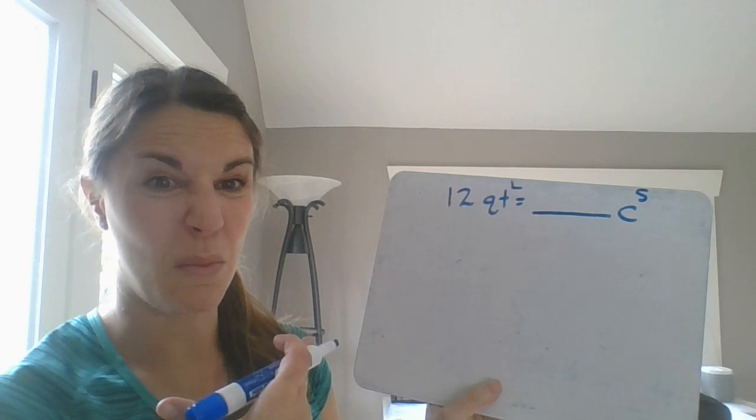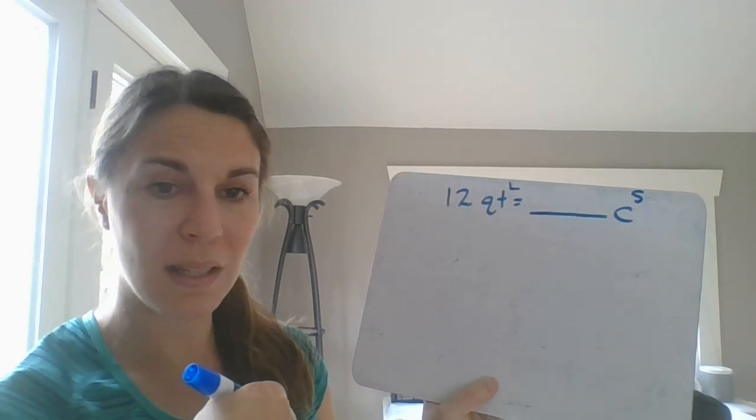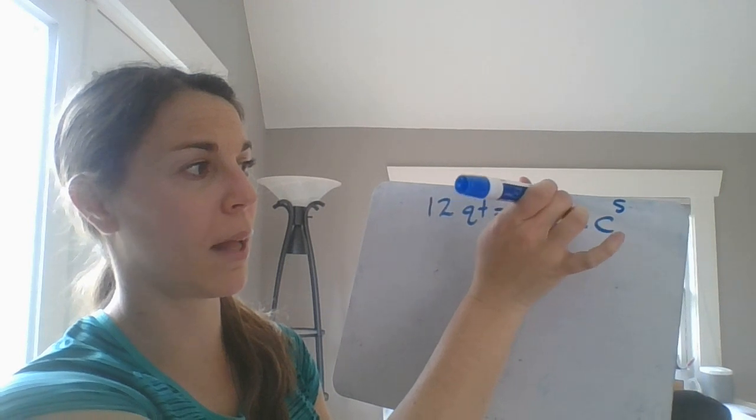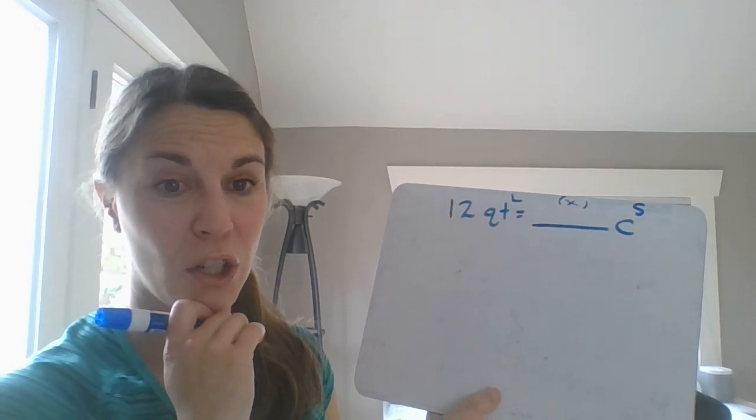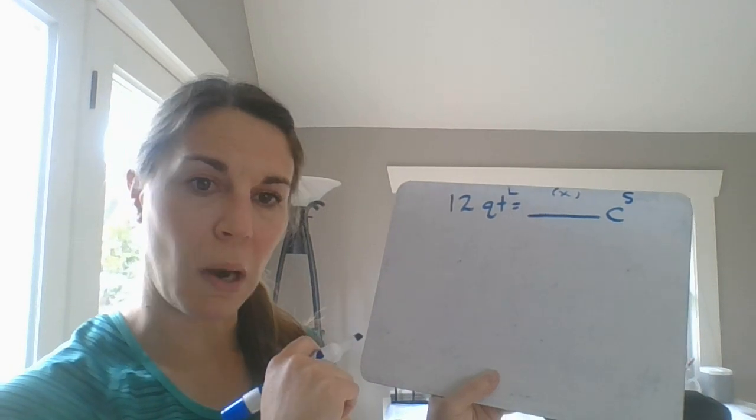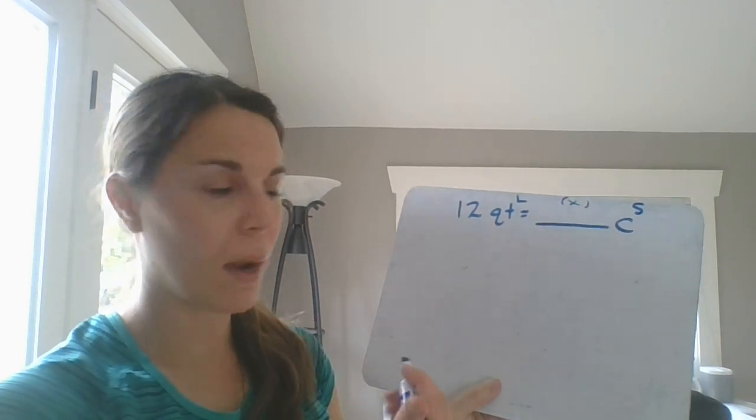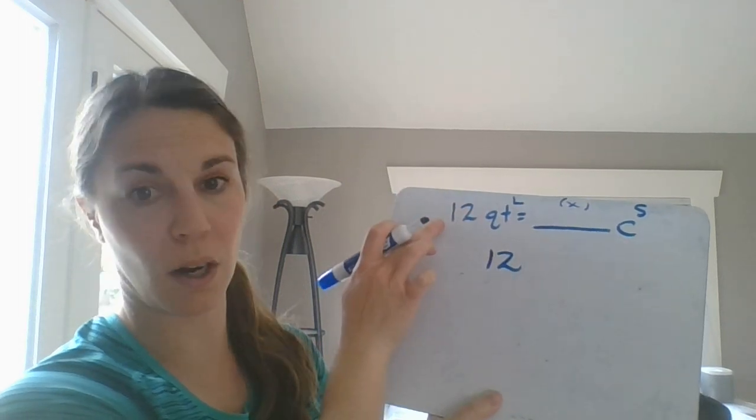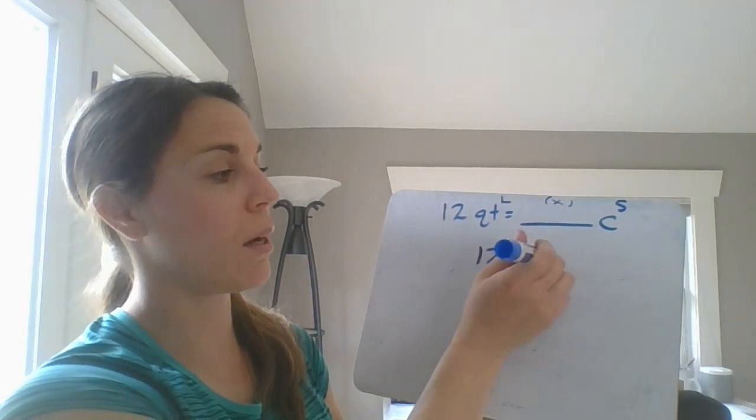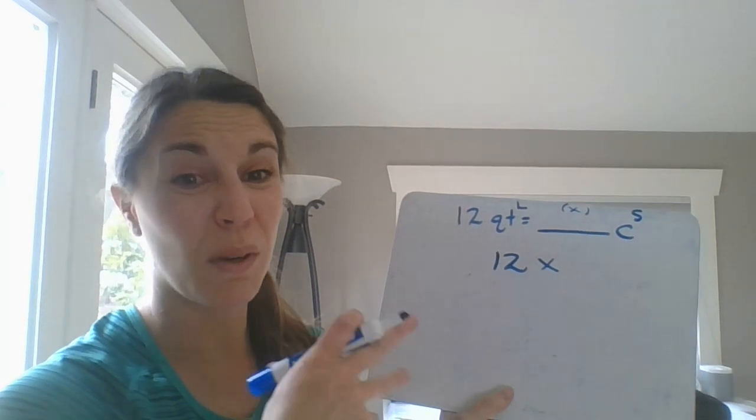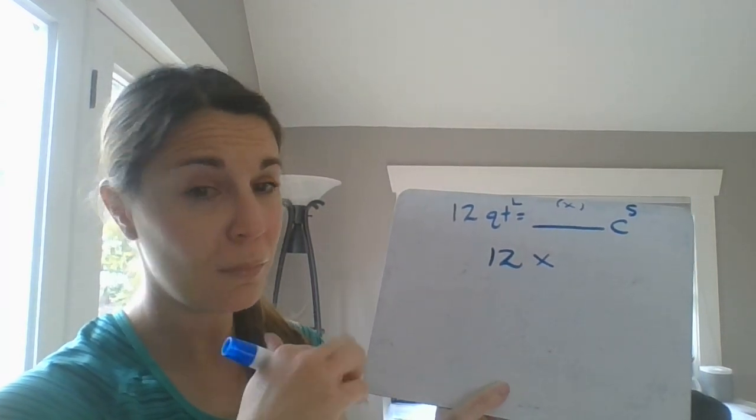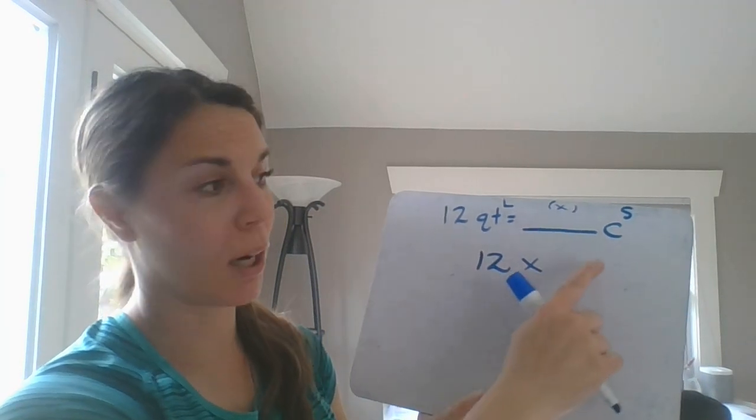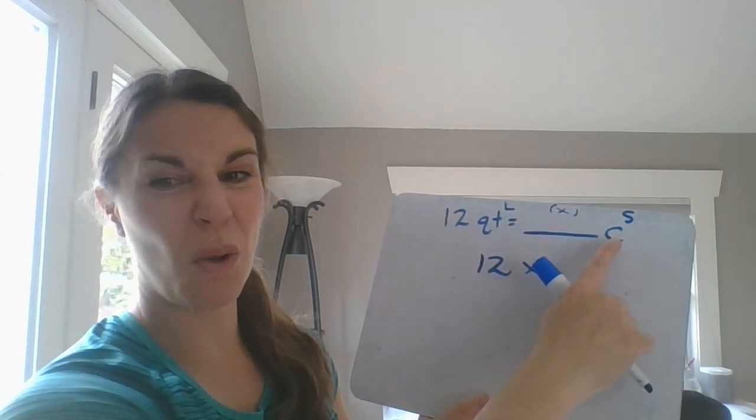So think about going down the staircase if that helps you, right? And down always means to multiply. And we're going from a larger to a smaller. Now, here's the tricky part because we're not in metric. We're still going to write an expression, right? So I'm going to take that 12, which is what I started with. I know I'm going to be multiplying. Now, this is where the chart is really important.